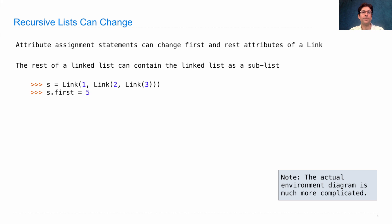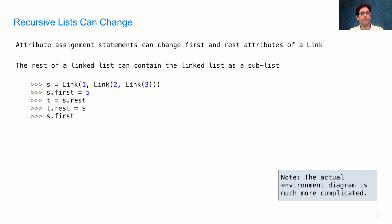So if I change the first to 5, and I change t to s.rest, and then I change t.rest to s — what have I done? Well, I've created a linked list where the first element is 5, which is what I set it as.